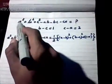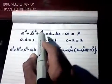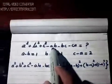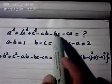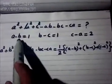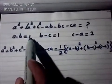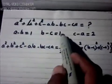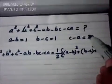Find the value of a² + b² + c² - ab - bc - ca, given that a - b = 1, b - c = 1, and c - a = 2.